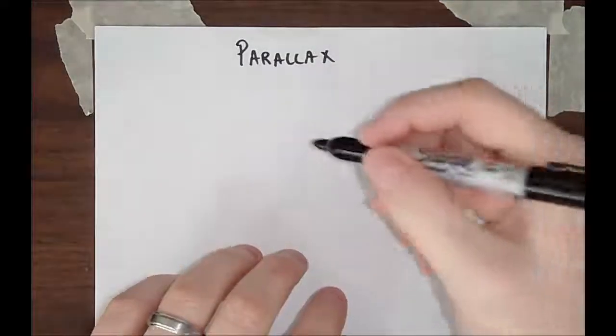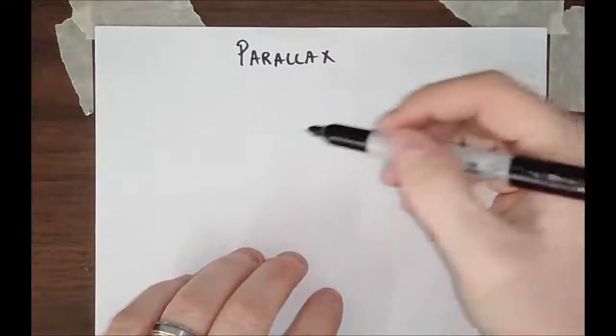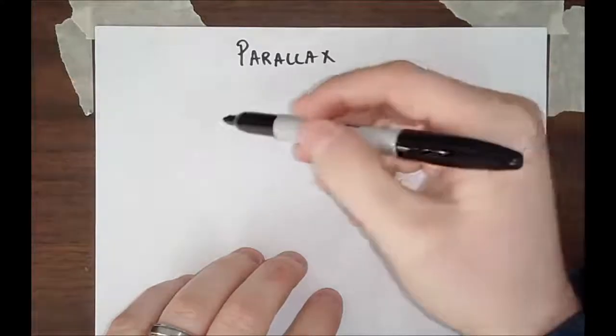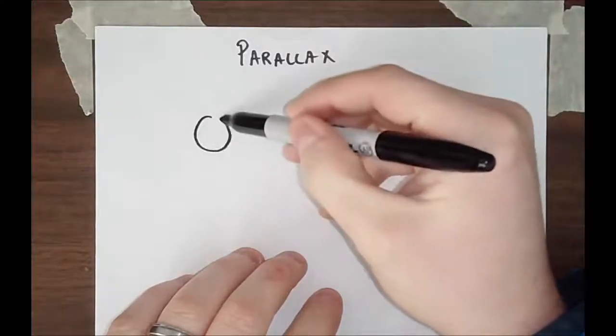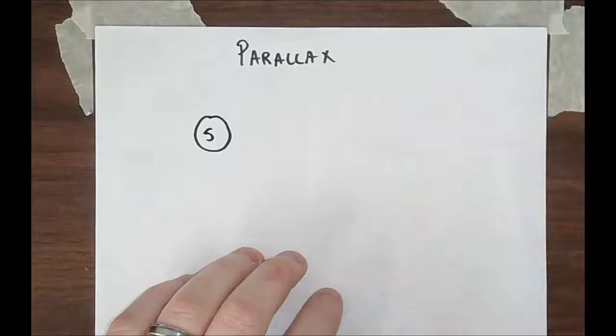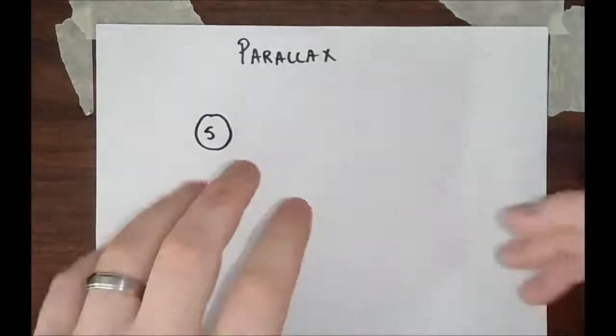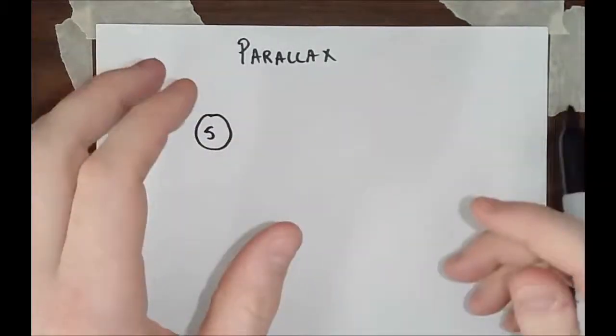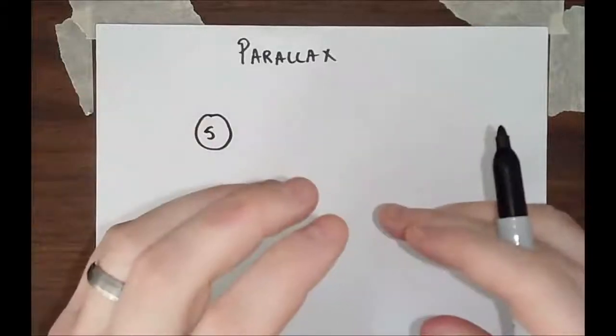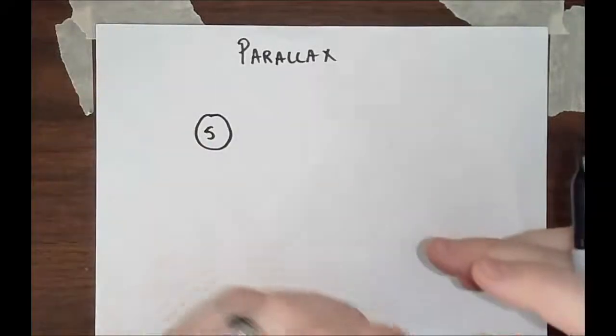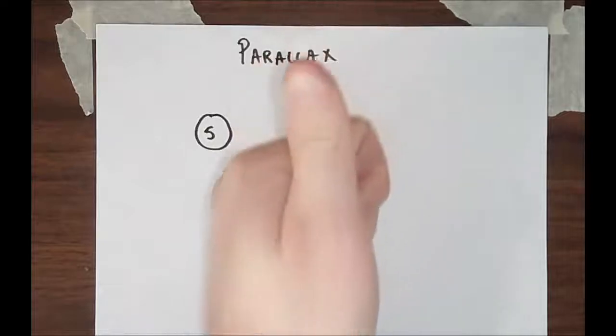Parallax is a very unique phenomenon that happens whenever you view an object from very, very far away. As an example, we have our sun. Parallax is pretty much when you look at something from one perspective and then it appears to change when you look at it from another perspective.